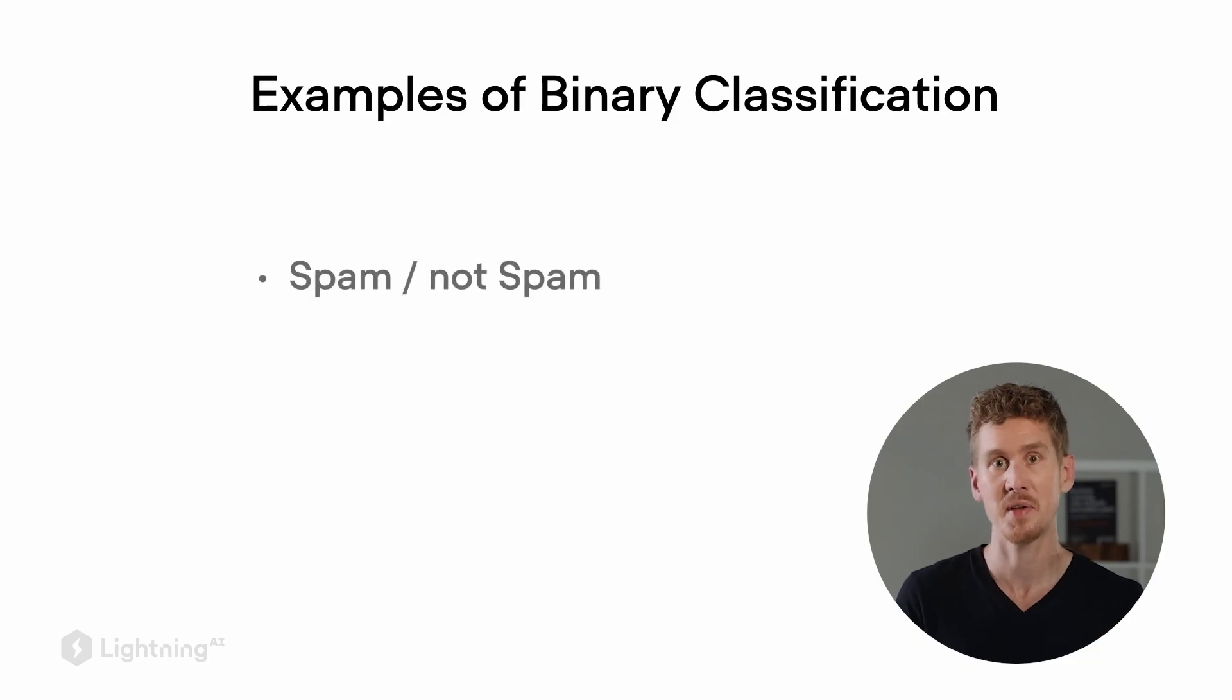If you think binary classification sounds boring, there are actually a lot of real-world use cases of binary classification, such as spam classification, or if you have photographs where you want to detect whether it shows one object or the other, or in this case, a cat or a dog. And then banks often use a binary process for loan approvals, so whether a loan gets approved or rejected.